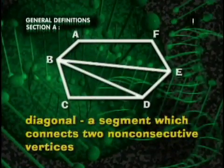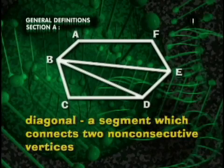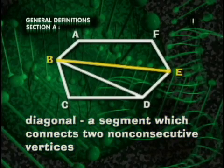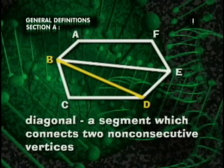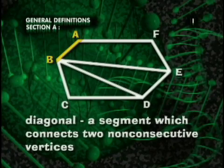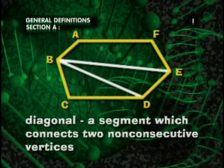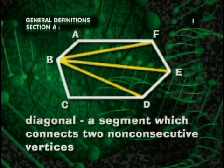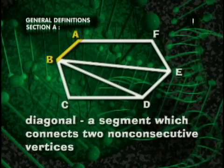A diagonal is a segment which connects two non-consecutive vertices. In this diagram, B-E and B-D are diagonals. We couldn't draw a diagonal from B to A because segment B-A is already part of the polygon. That's why diagonals must be from non-consecutive vertices. B and A are consecutive vertices.